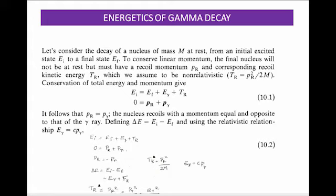Energetics of gamma decay: consider a nucleus of mass M at rest. It decays from its initial energy state Ei to final energy state Ef. The energy equation is: Ei = Ef + E_gamma + TR, where E_gamma is the energy of the gamma ray and TR is the kinetic energy of the recoiling nucleus.